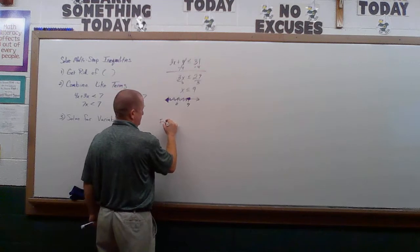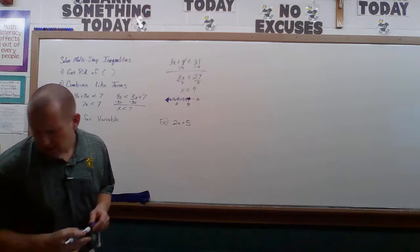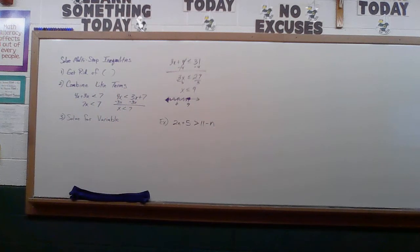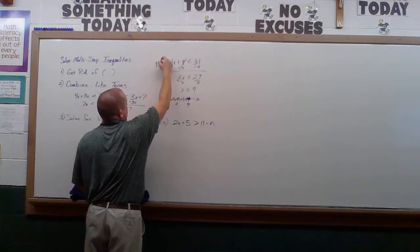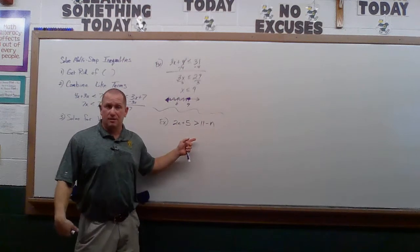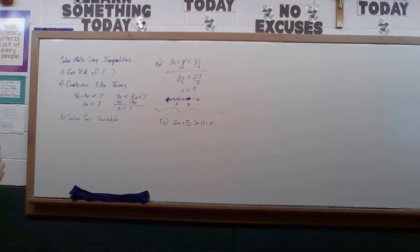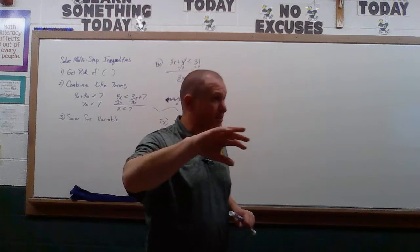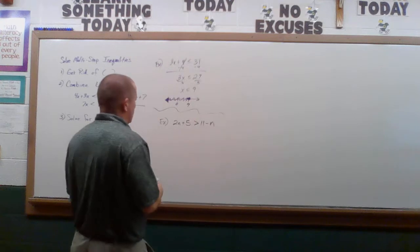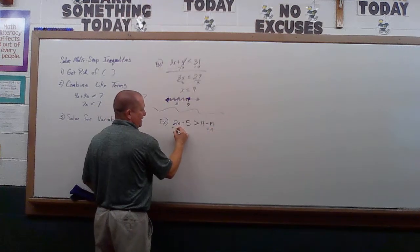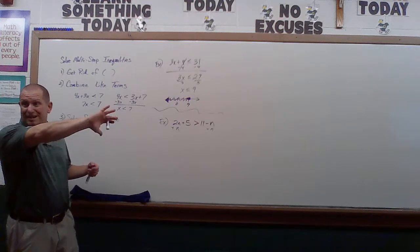Example two: 2n + 5 > 11 - n. There are no parentheses, so we skip step one. We need to combine like terms because we've got an n on each side. We want to move the smaller coefficient toward the bigger one to avoid working with negatives — if we had a negative and had to divide, we'd have to flip-flop the inequality symbol. So we move our n's to the left: add n to both sides.